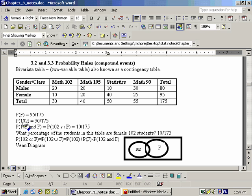We might also want to know what's the probability that a person is in math 102. Well, we have a total of 30 people in math 102 out of the grand total of 175. So the answer to this problem would be 30 out of 175, or you could switch this to a percentage.